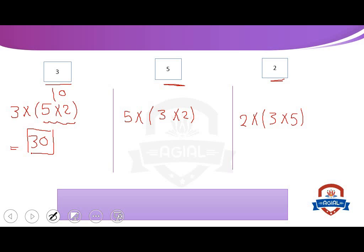Now the second one: we start by 5. Multiply 3 by 2 between two brackets. We must multiply the two numbers between brackets first. 3 multiply 2 equals 6. So, 5 multiply 6 equals 30. When we start by 5, the result equals 30.